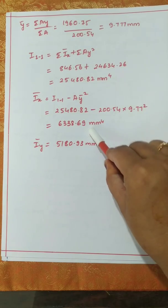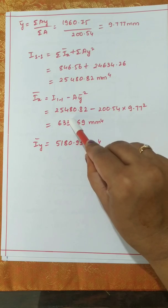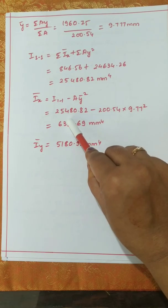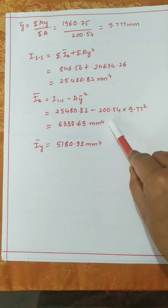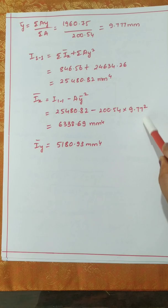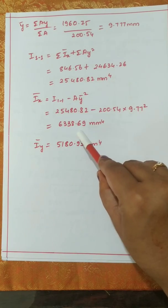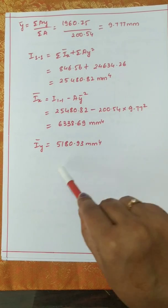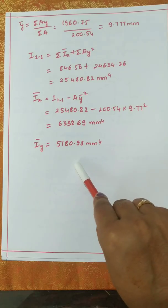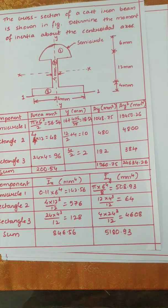Then I_x̄ (centroidal) = I_11 − A·ȳ² = 25480.82 − 200.54×9.77² = 6338.69 mm⁴. And I_ȳ = 5180.93 mm⁴, as found in the table.